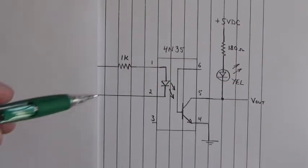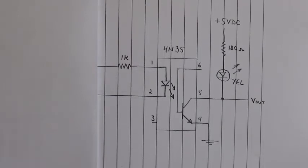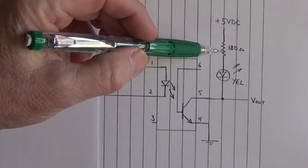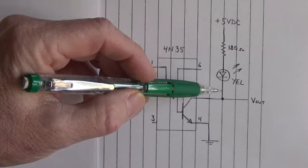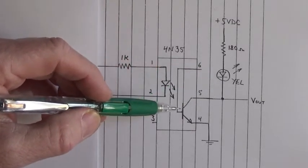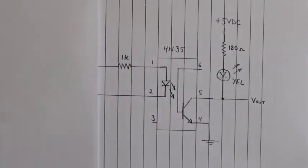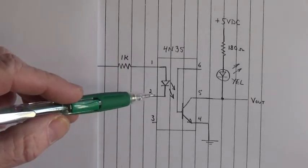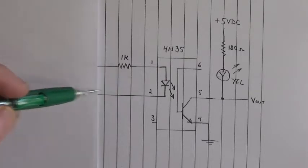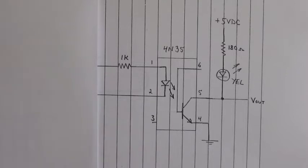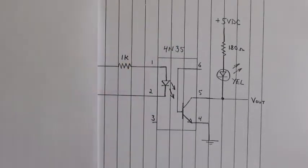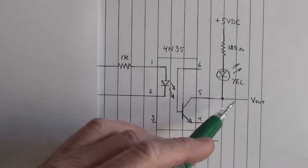Good evening everyone. Here's an optocoupler circuit. In order to turn on this yellow LED, current has to flow from plus 5 volt DC through the 180 ohm resistor through the anode-cathode junction of that yellow LED, through the photo transistor that's turned on. To turn on the photo transistor we have to apply a positive voltage on the anode and its ground to the cathode. Photons are emitted from that LED into the base of that photo transistor, driving it into conduction and allowing current flow through the yellow LED through the collector-emitter junction to ground.